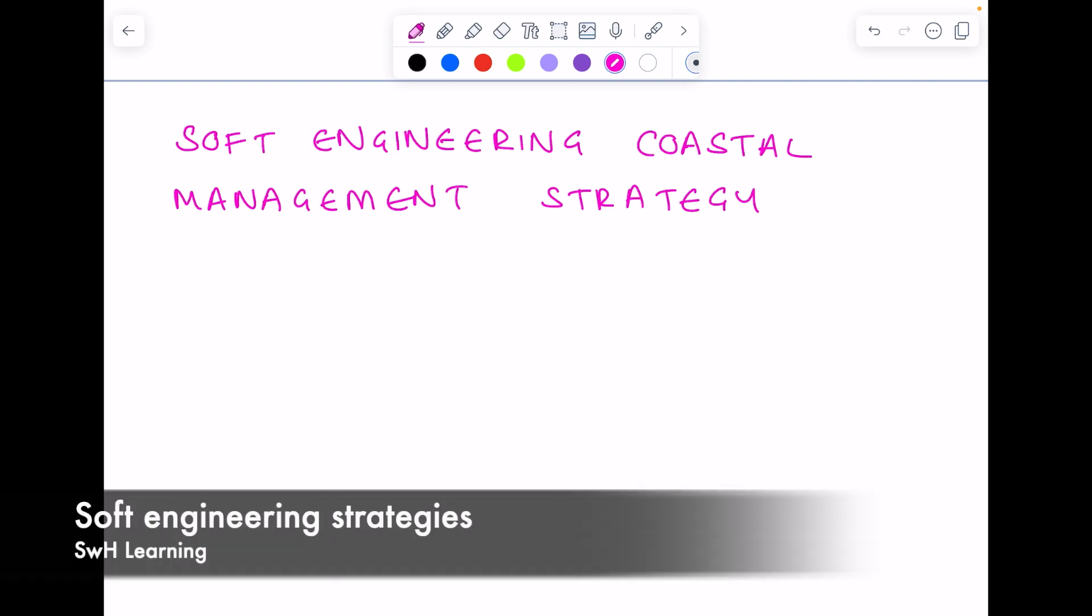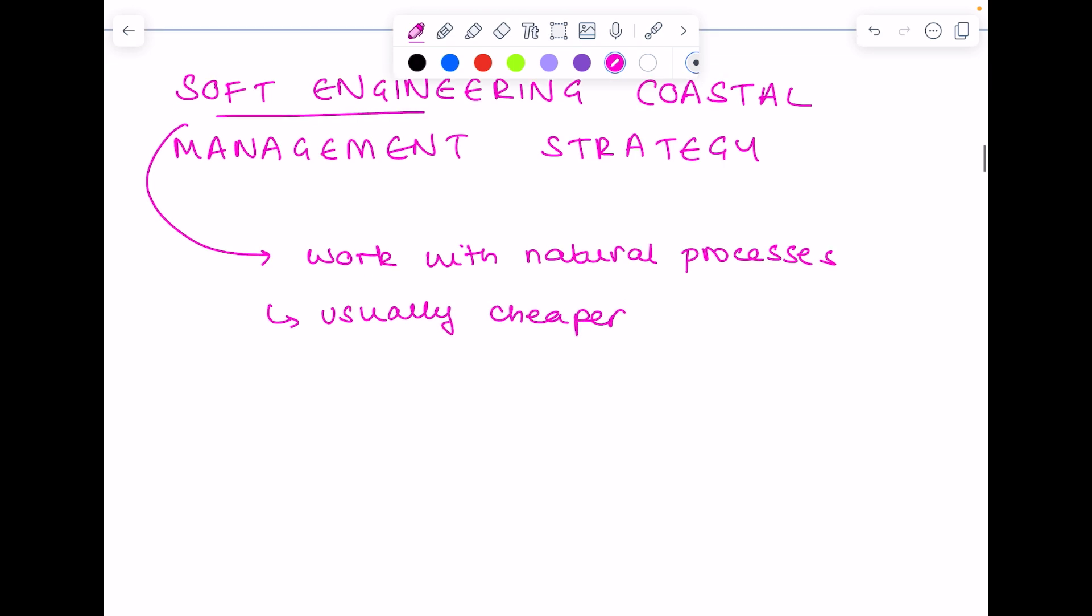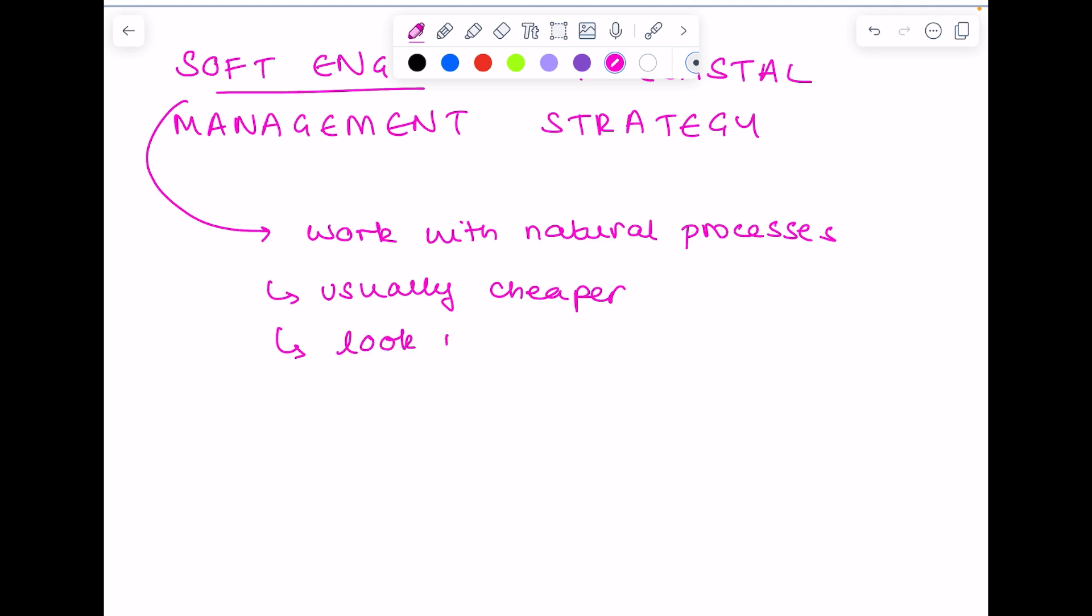Moving on to soft engineering coastal management strategies. Unlike hard engineering strategies, they work with natural processes. If you remember, sea walls, revetments, riprap, they absolutely do not work with natural processes. They work very much against them. Whereas soft engineering strategies are the total opposite, and because of this they're usually cheaper and they look natural. But not as effective at preventing coastal erosion compared with hard engineering strategies.